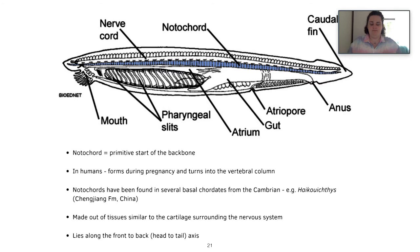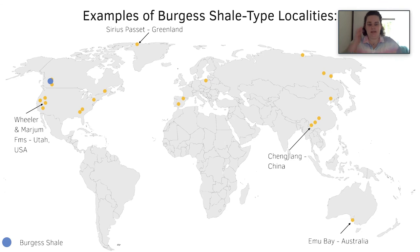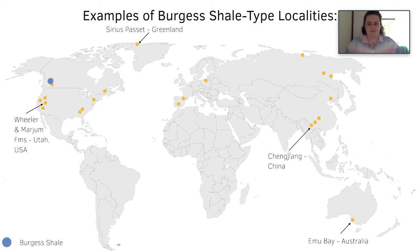The notochord is like the primitive start of a backbone — in humans it forms during pregnancy and then turns into the vertebral column. Notochords such as Pikaia's have been found in several basal chordates from the Cambrian, such as Haikouichthys from the Chengjiang Formation in China. The notochord is made of tissues similar to cartilage, which surrounds the nervous system, and lies along the head-to-tail axis. There are around 40 localities worldwide exhibiting Burgess Shale-type preservation from the Cambrian, including Sirius Passet in Greenland, the Wheeler and Marjum Formations in Utah, Chengjiang in China, and Emu Bay in Australia. Chengjiang is notably an earlier deposit than the Burgess Shale.